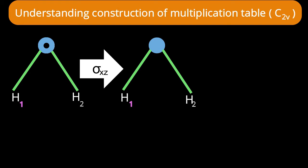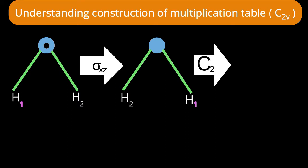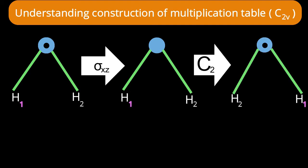The structure after σxz is as expected. Now on this result I perform the next operation: C2 rotation by 180 degrees. The axis passes through the oxygen. Hydrogen two, now on the left side, moves to the right side after rotation. The nose, which was pointing away from us, now comes back toward us after the C2 rotation. So hydrogen one ends up on the right side and the nose points toward us.